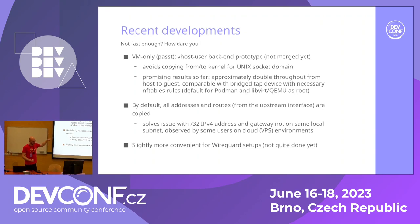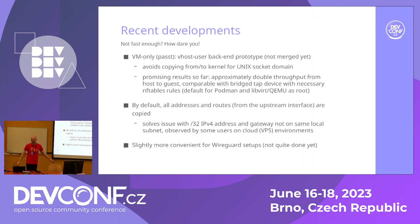We now copy all the addresses and routes, not just one. You saw that I had so many IPv4 addresses there, because we had some problems with cloud environments that some users reported. And WireGuard almost works out of the box finally — that's a bit complicated, but it looks like a popular use case for Podman users.